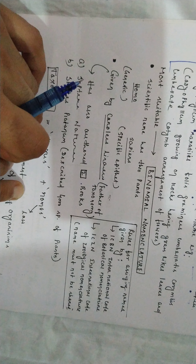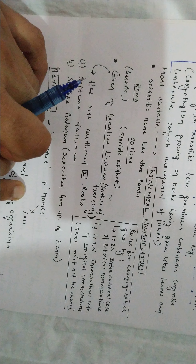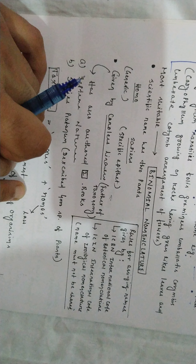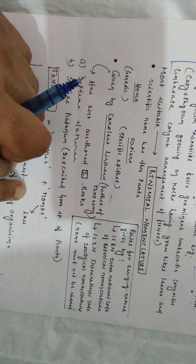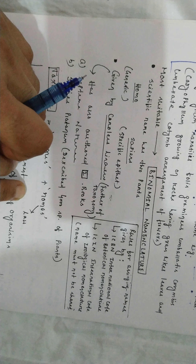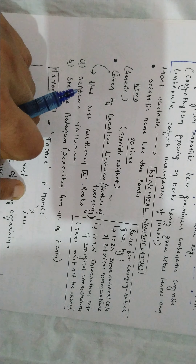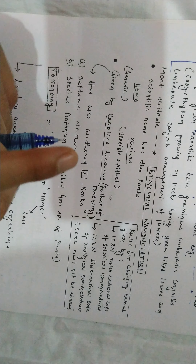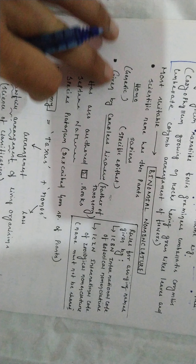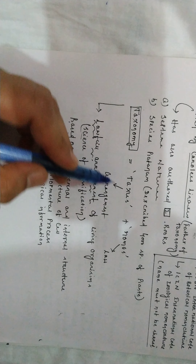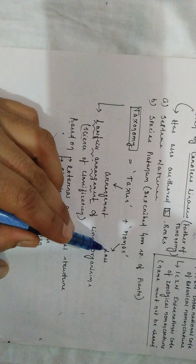The rules for assigning names are governed by the International Code of Botanical Nomenclature and the International Code of Zoological Nomenclature — these are the two important codes used for naming flora and fauna. Taxonomy means naming and arranging organisms — the word comes from 'taxis' meaning arrangement and 'nomos' meaning laws.